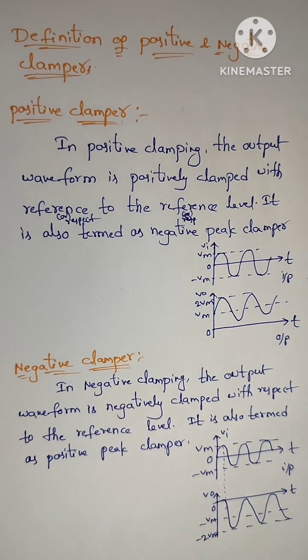In negative clamping, the output waveform is negatively clamped with respect to the reference level. It is also termed as positive peak clamper.